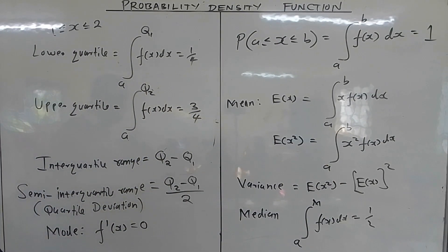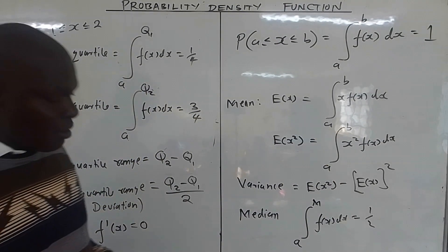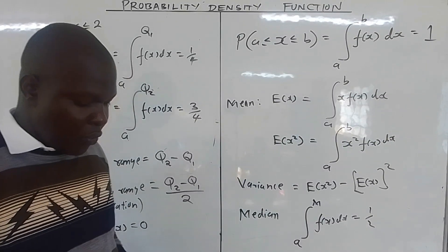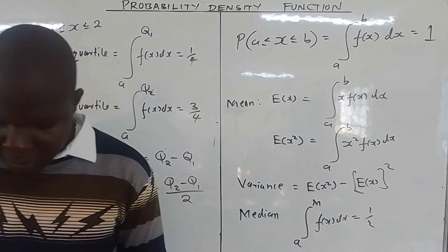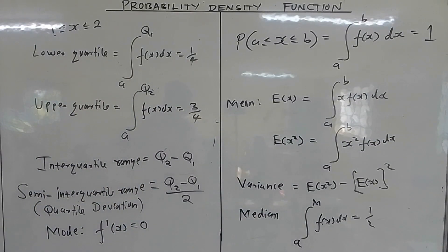So we are going to see how that works out. Let us start with the first example to see how to deal with continuous random variables.